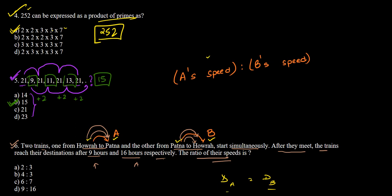Because the distances are equal, speed is inversely proportional to time. So A's speed : B's speed = B's time : A's time = 16 : 9. Taking the square root gives 4 : 3. The ratio of their speeds is 4 : 3, which is option B — the correct answer.